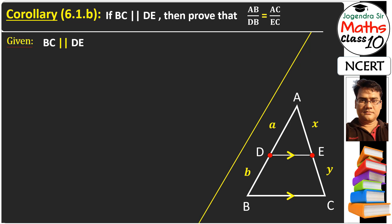We have BC parallel to DE. And what we have to prove? We have to prove this, or we can write this as A plus B upon A is equal to X plus Y upon X. So what do we have to do here?